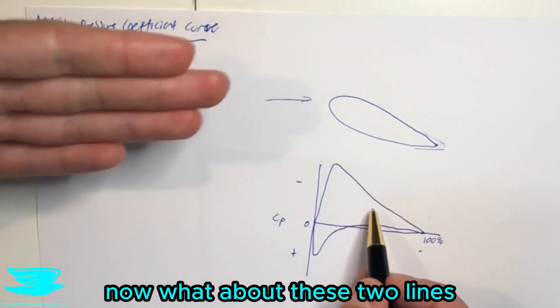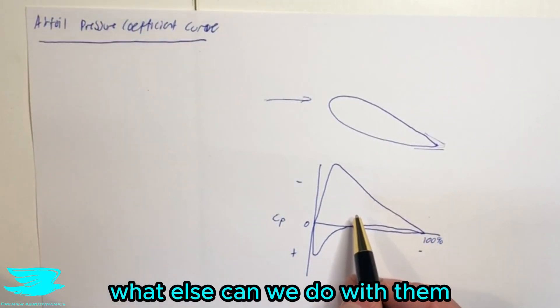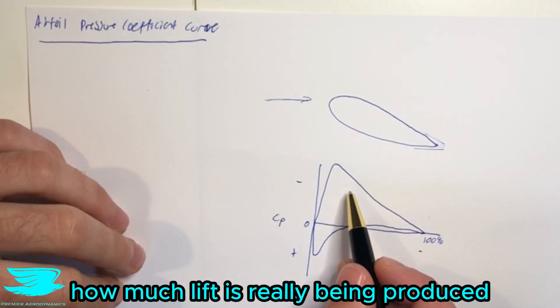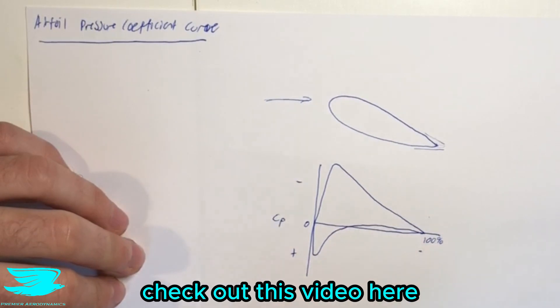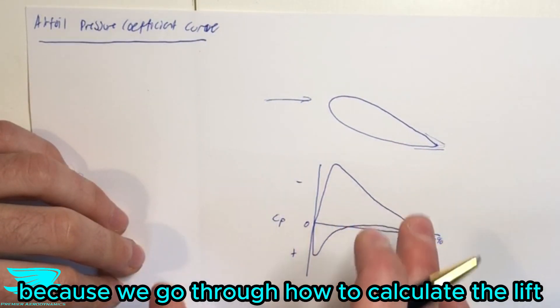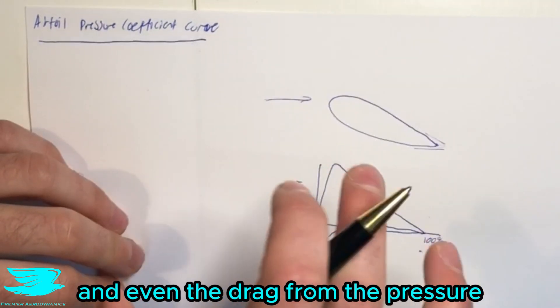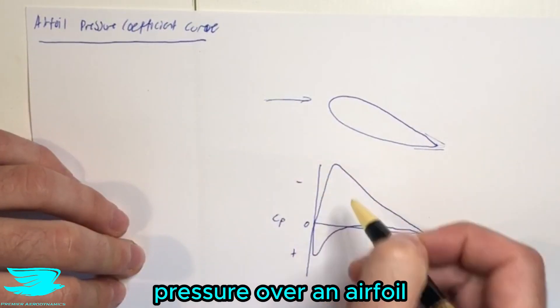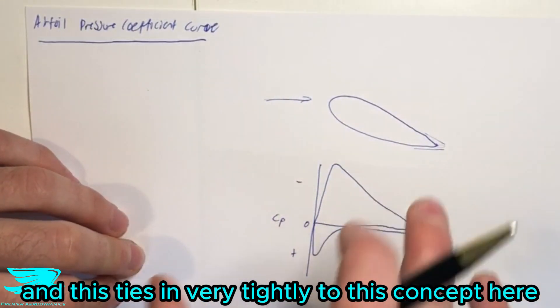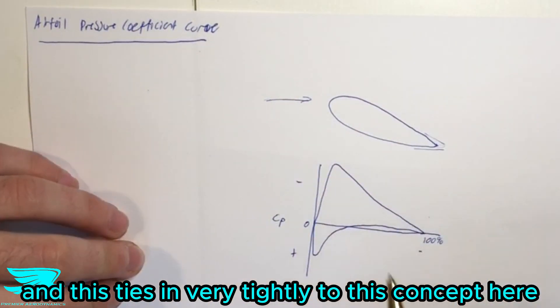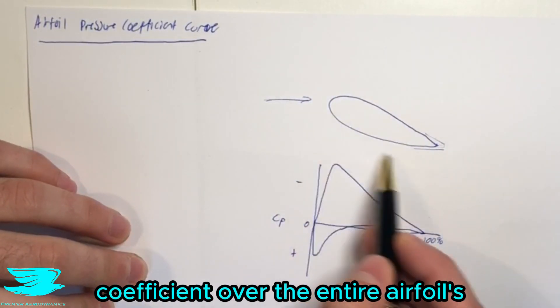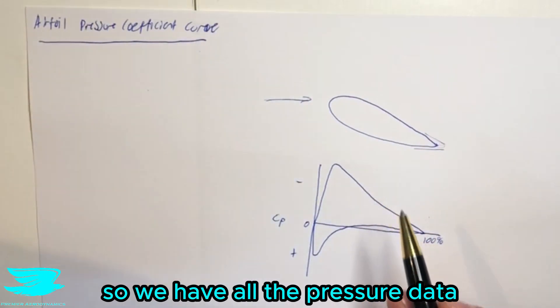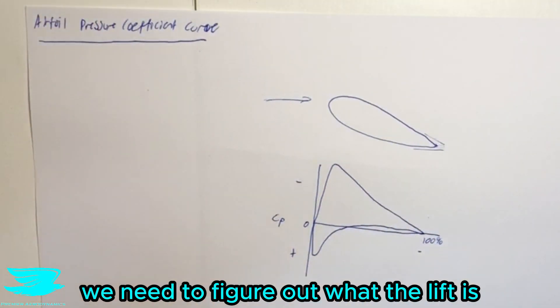Now, what about these two lines? What else can we do with them? Well, another thing we can look at is how much lift is really being produced. So from last week's video, if you haven't checked that out, check out this video here, because we go through how to calculate the lift and even the drag from the pressure coefficient and the general pressure over an airfoil. And this ties in very tightly to this concept here. So here we have the graph of the pressure coefficient over the entire airfoil, top surface and bottom surface. So we have all the information we need to figure out what the lift is.